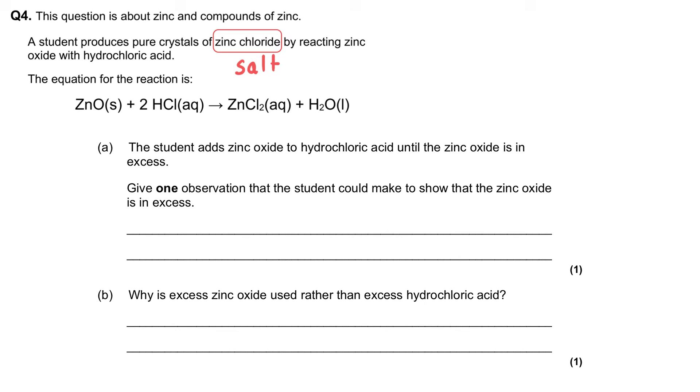The equation for the reaction is zinc oxide, ZnO, in the solid state, reacts with two hydrochloric acid in the aqueous state, so the acid will be a solution, and this turns into zinc chloride, our target crystals, which are aqueous, and we also produce water in the liquid state.